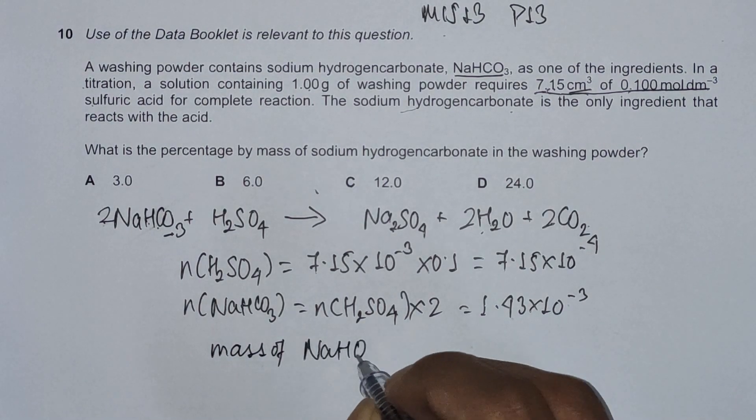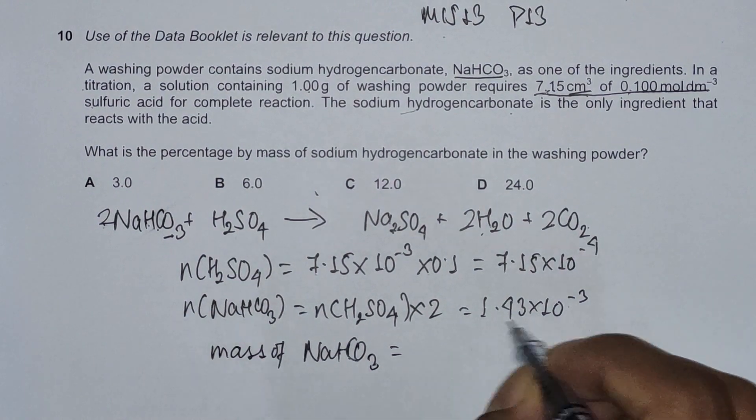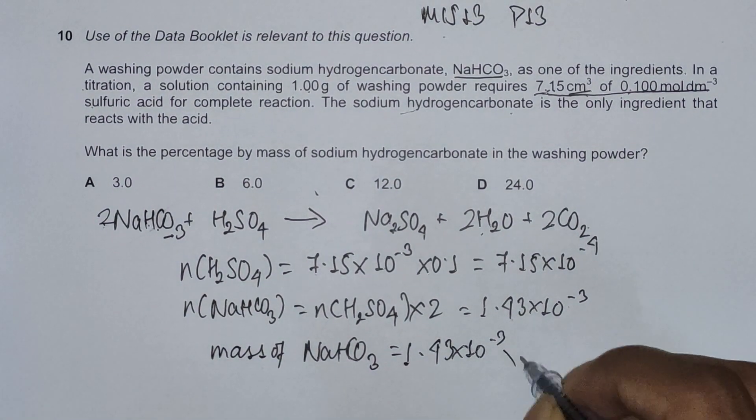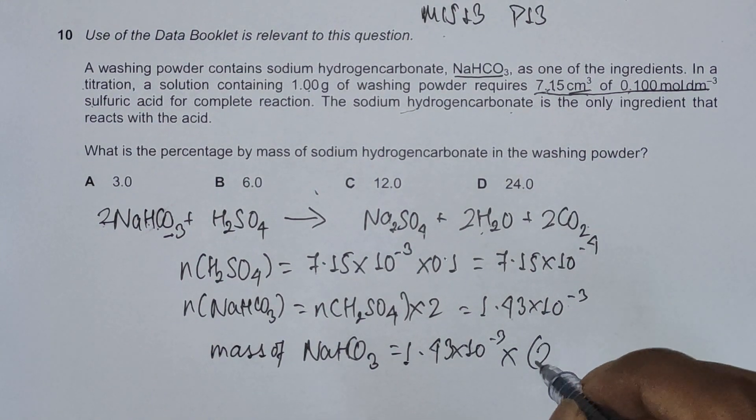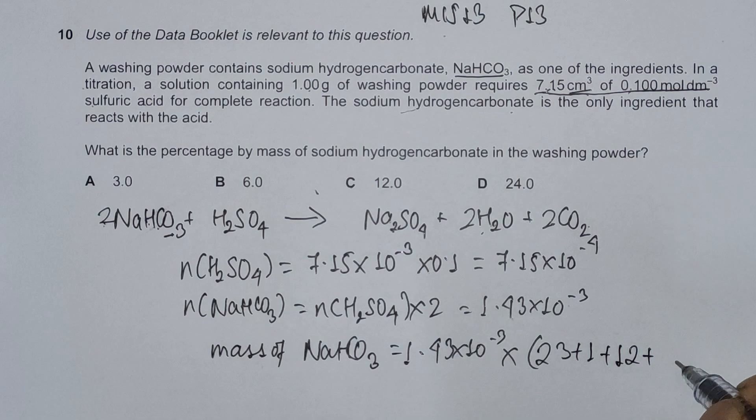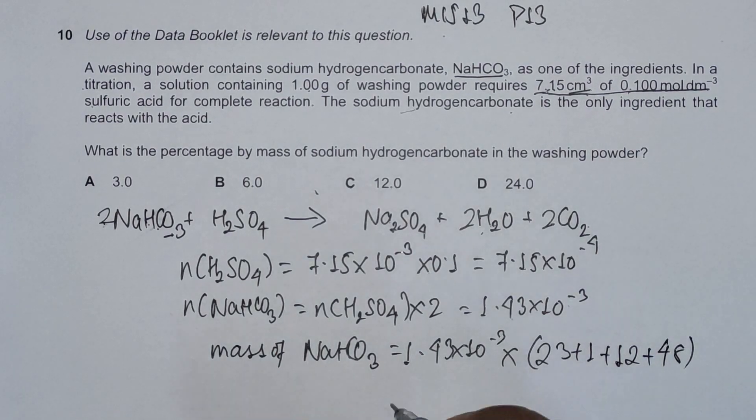Mass of NaHCO3 should be its moles, which is 1.43 × 10⁻³, multiplied by its Mr value. Sodium is 23, H is 1, C is 12, and oxygen is 16 times 3 is 48.